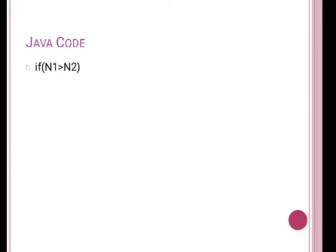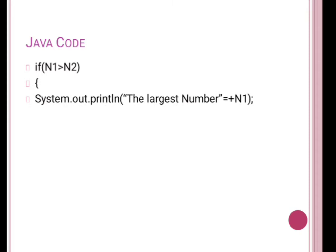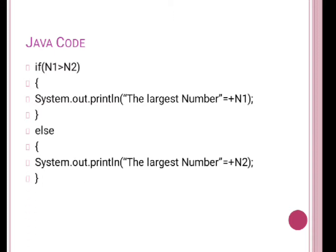Now the important part: write the conditional statement. We write: if n1 is greater than n2 — because we don't know what value the user will enter, n1 might be greater or smaller. If n1 is greater than n2, then the largest number is n1; otherwise, in the else block, n2 is the largest.